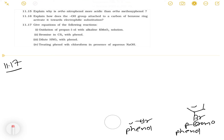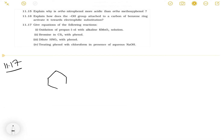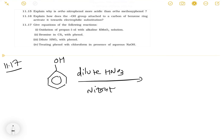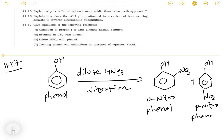The third part: dilute HNO3 with phenol. When phenol reacts with dilute HNO3, this is a nitration reaction. Because the acid is dilute, it will attack ortho and para positions. So we will get ortho-nitrophenol and para-nitrophenol. Para-nitrophenol is the major product and ortho-nitrophenol is the minor product.